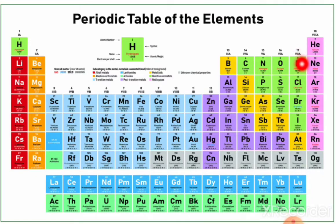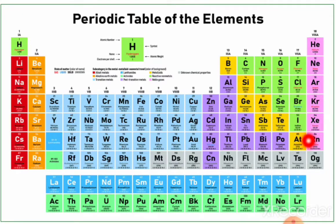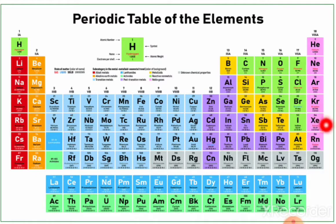Then the halogen family, group 17: fluorine, chlorine, bromine, iodine, astatine. And the last is the inert gas elements, group 18: helium, neon, argon, krypton, xenon, and radon. This covers the P-block elements.